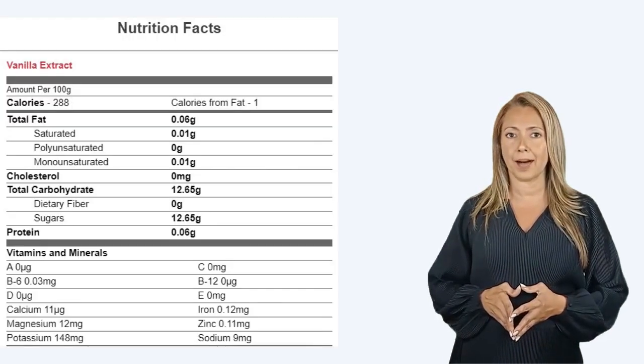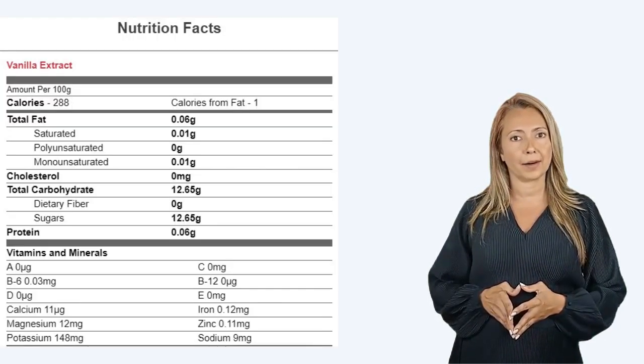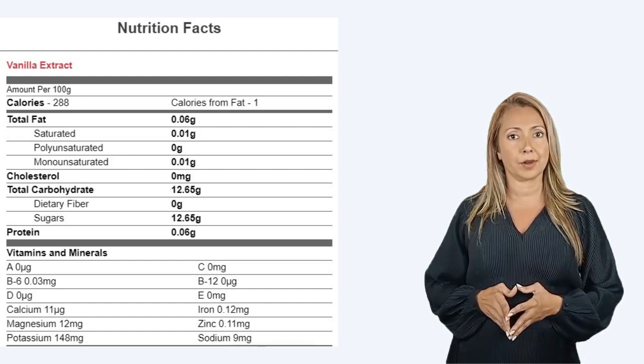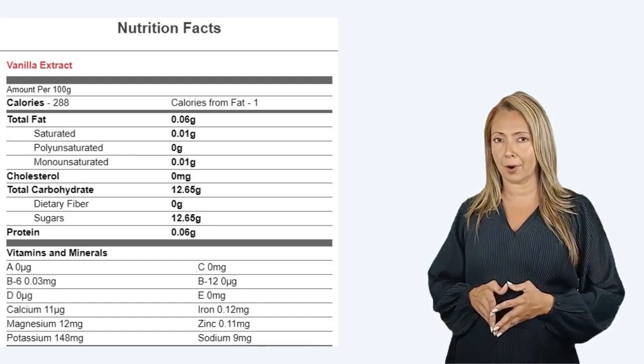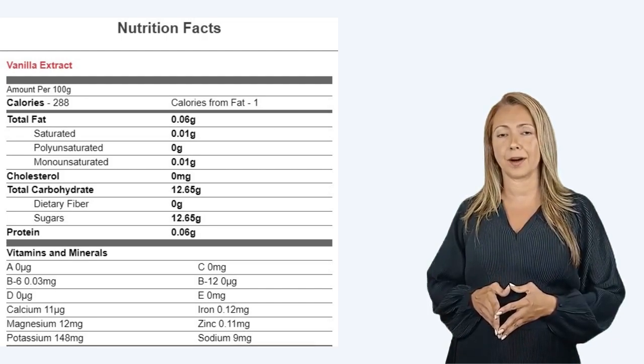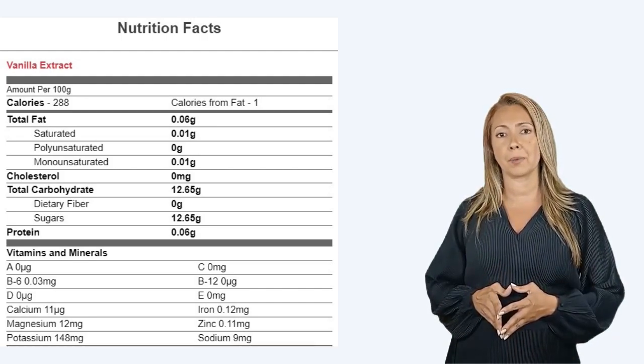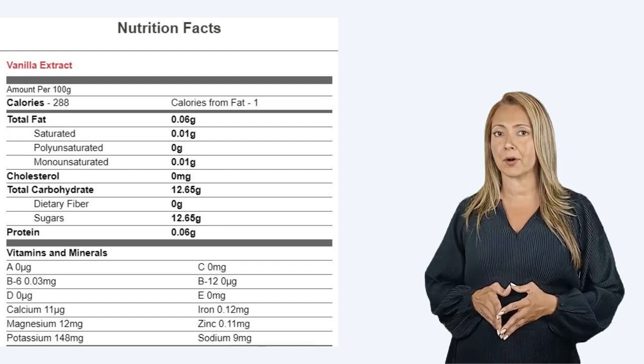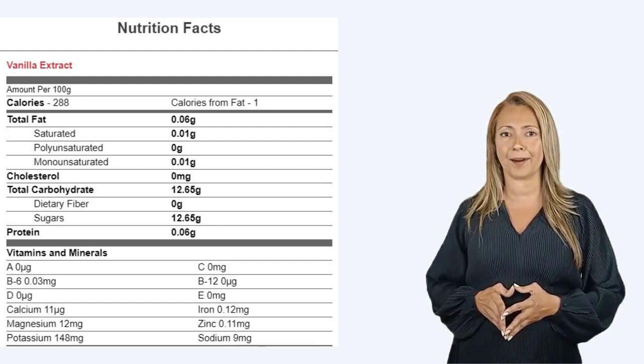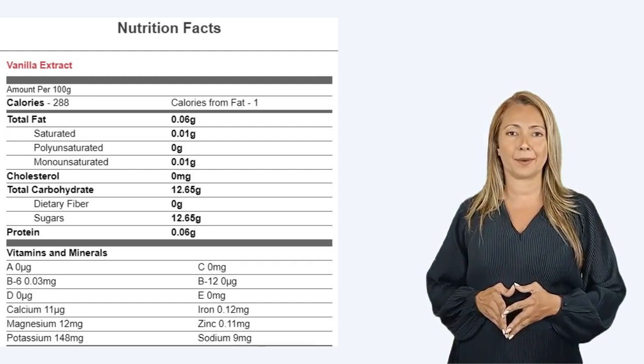Nutrition facts for vanilla extract, amount per 100 grams: calories 288, calories from fat 1, total fat 0.06 grams, saturated 0.01 grams, polyunsaturated 0 grams, monounsaturated 0.01 grams, cholesterol 0 milligrams, total carbohydrate 12.65 grams, dietary fiber 0 grams, sugars 12.65 grams, protein 0.06 grams.